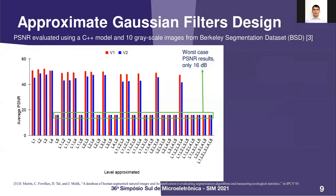Both architectures were evaluated in terms of PSNR using images from the BSD dataset. The results show that all combinations with level 5 approximated achieve the lower PSNR values, while the remaining combinations achieve more than twice this result.